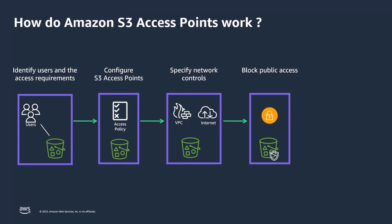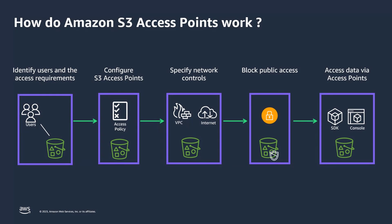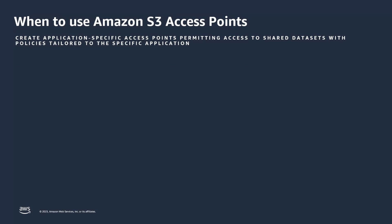At this point, your access point is created. You can access the objects in an Amazon S3 bucket with an access point using AWS Management Console, AWS CLI, AWS SDKs, or S3 REST APIs. For S3 object operations, you can use the access point ARN in place of a bucket. For requests requiring a bucket name in the standard S3 bucket name format, you can use an access point alias instead. With S3 access points, you can create application-specific access points, permitting access to shared datasets with policies tailored to the specific application.